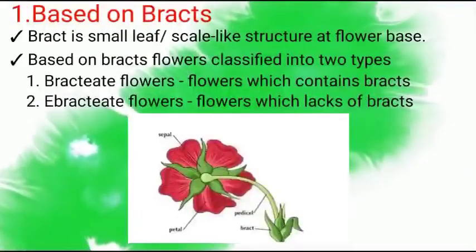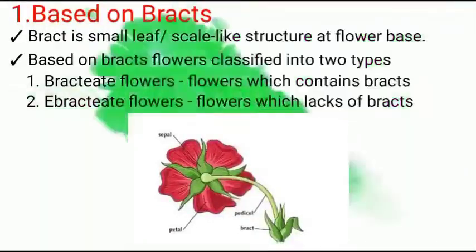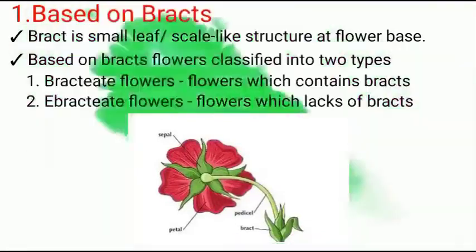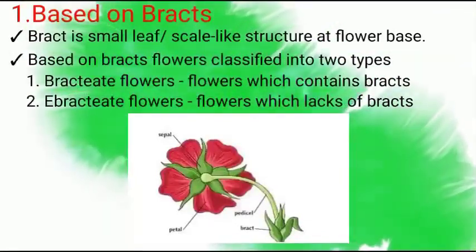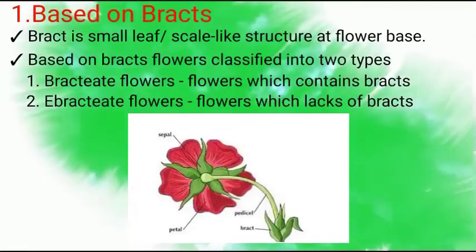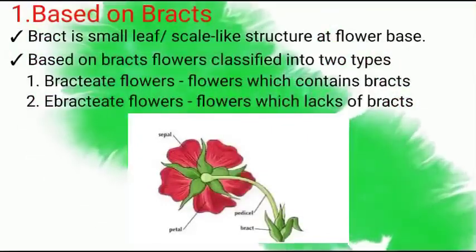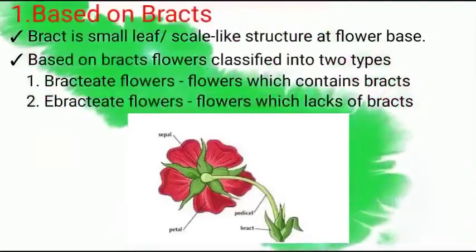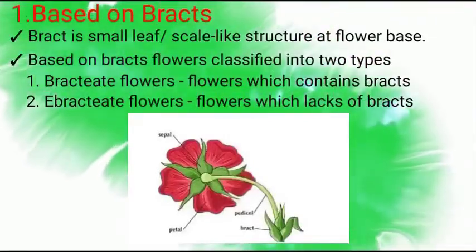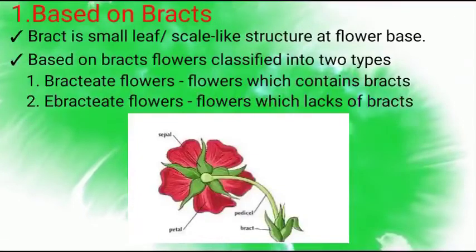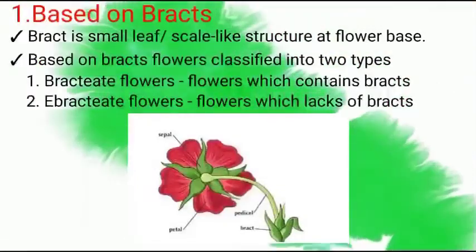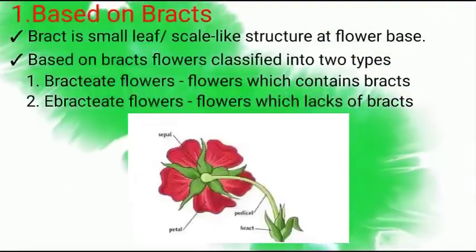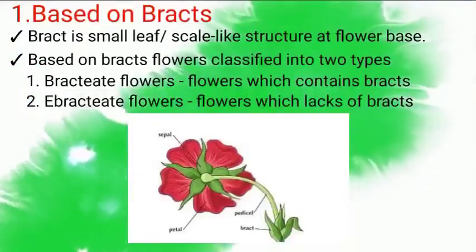The first aspect of classification of flowers is based on Bract. Bracts are small leaf-like or scale-like structures present at the base of the flower. Based on Bract, flowers are classified into two types: Bractiate Flowers, which contain Bracts, and Ebractiate Flowers, which lack Bracts.